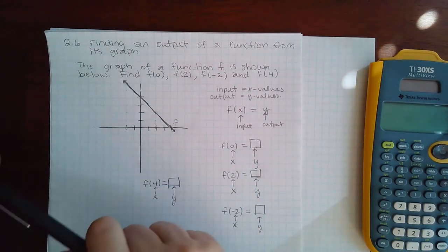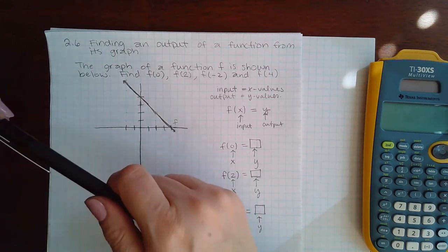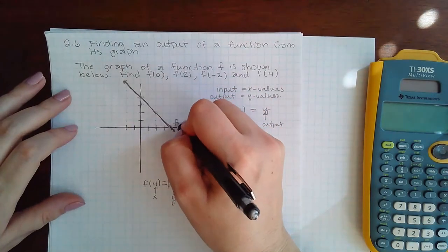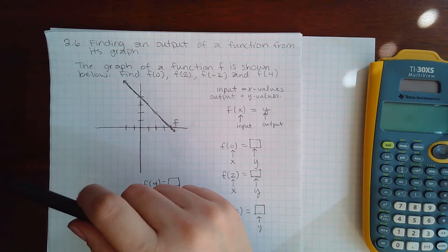Okay, this topic is 2.6, finding an output of a function from its graph. The graph of the function f is shown below. Find f(0), f(2), f(-2), and f(4).